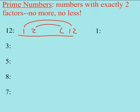2 times 6 is 12. 3 times 4 is 12. There's no numbers between 3 and 4, so now my factor rainbow is done.